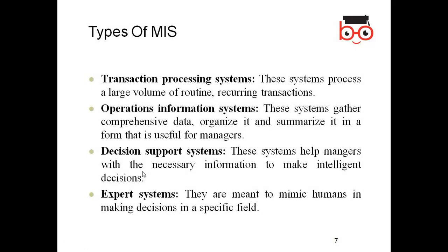There are different types of management information systems. Transaction Processing Systems (TPS) process a large volume of routine, recurring transactions — for example, bank transactions. Blockchain is the technology used in cryptocurrency; it is a decentralized system where ownership records are not stored centrally but distributed across many computers.